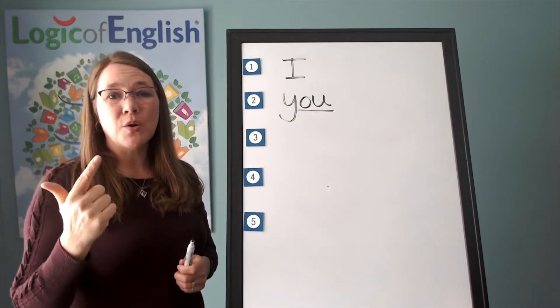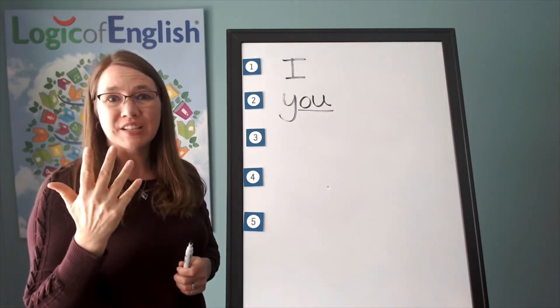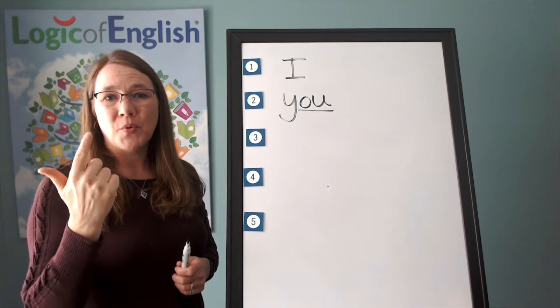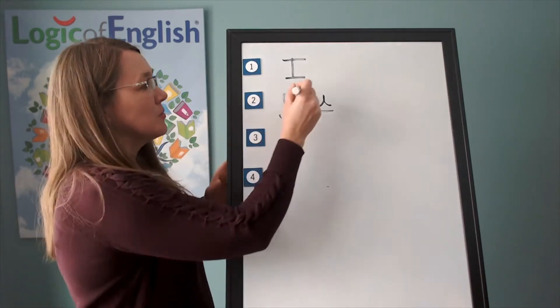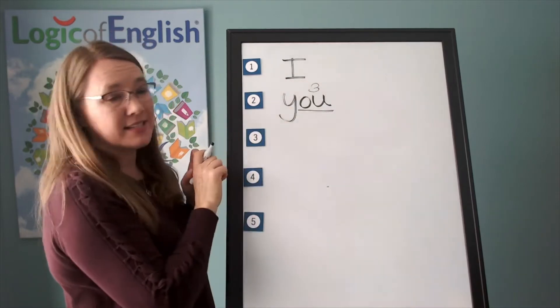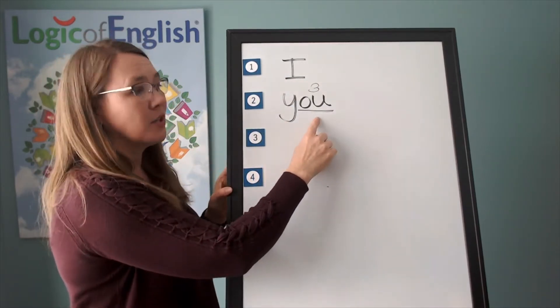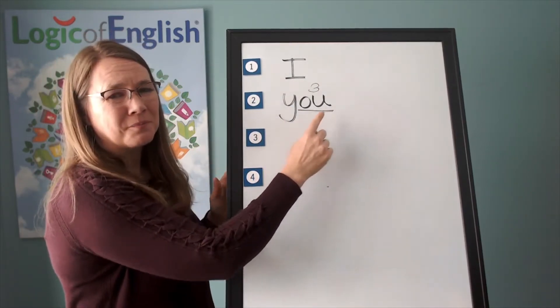What sound of ow, ow, oo, uh, uh is this? Ow, ow, oo, you. It's the third sound. So we'll put a three over it. Let's read it. Ya, oo, you.